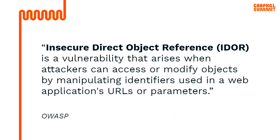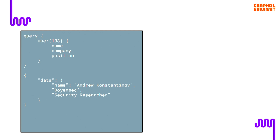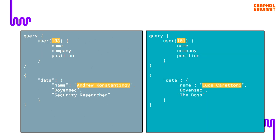One specific problem with insufficient authorization that is very common in GraphQL is IDOR — Insecure Direct Object Reference. Basically this is a vulnerability where you have an internal object ID for some object, that object ID is supplied by the client, and you do not do authorization checks to make sure the client is actually authorized to use that. Here's a practical example: a query that returns my data — Andrew Konstantinov — where I'm supplying as the client the ID 103. But if as an attacker I notice that and try to play with it, I run the same query but supply a different variable value — 101 — and then I get someone else's data. That's IDOR.